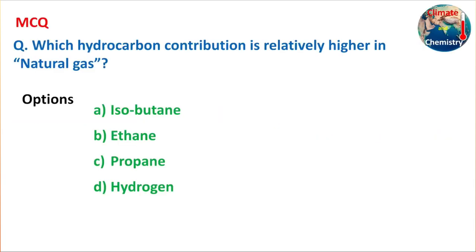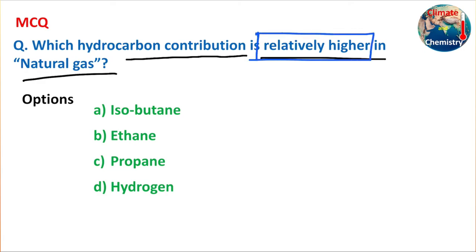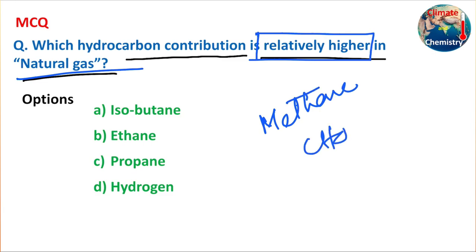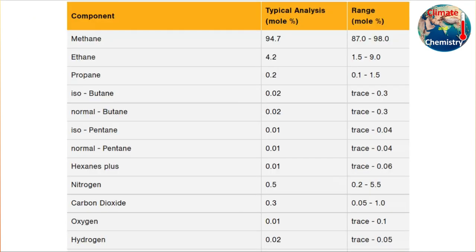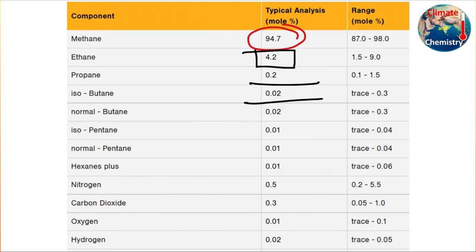Now for the MCQ answer: which hydrocarbon contribution is relatively higher in natural gas? We know methane is the main component, but since methane was not among the options, the answer is ethane. Looking at the chart, methane contributes near about 95%, ethane is in second position at 4.2%, propane at 0.2%, isobutane at 0.02%, and hydrogen also at 0.02%. So the answer is ethane.